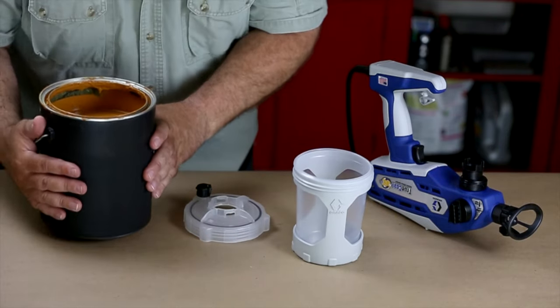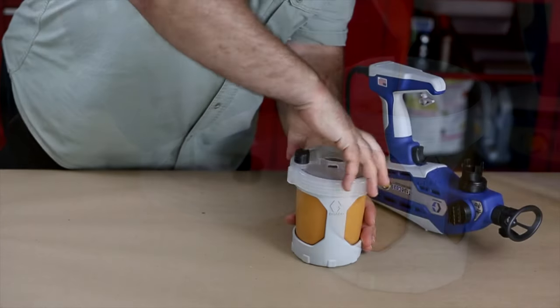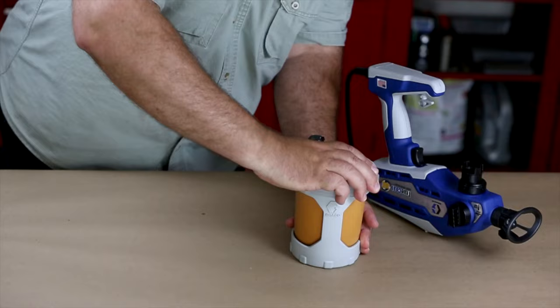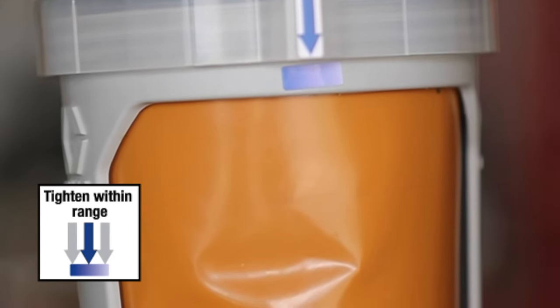Insert a flex liner bag into the cup support. Fill the flex liner bag with material and screw the cup cover onto the cup support. Tighten until the two alignment guides are within range.